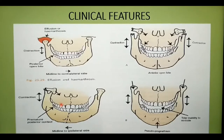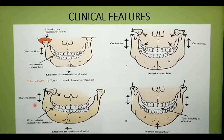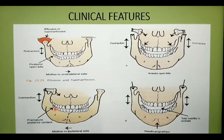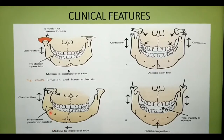The second diagram shows a unilateral fracture with significant dislocation or displacement. This may result in contraction of the fragments under the action of the pterygomassoteric sling, with ipsilateral premature posterior contact — ipsilateral meaning on the same side. This produces a premature posterior contact on the same side and deviation of the mandibular midline to the affected side — premature contact and shift of midline towards the same side.